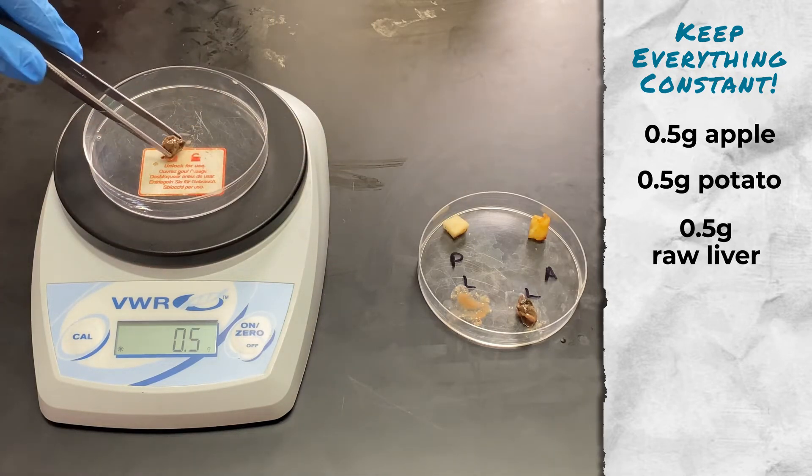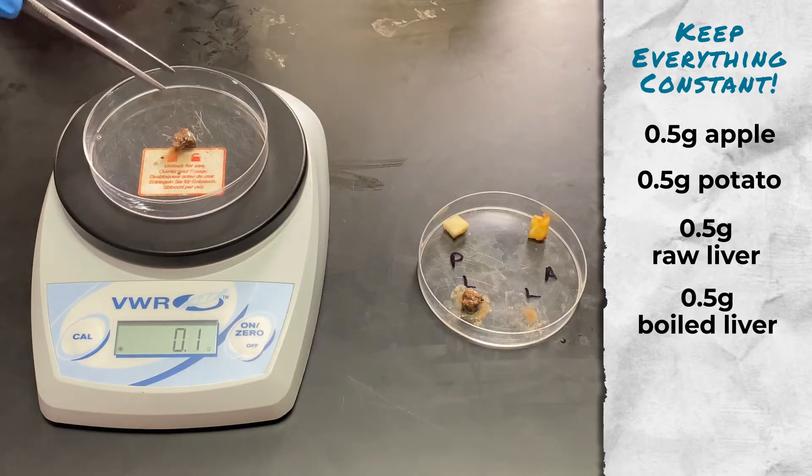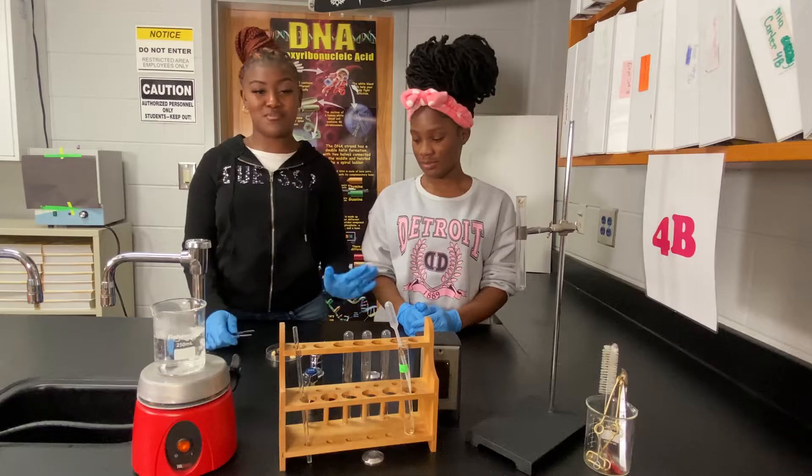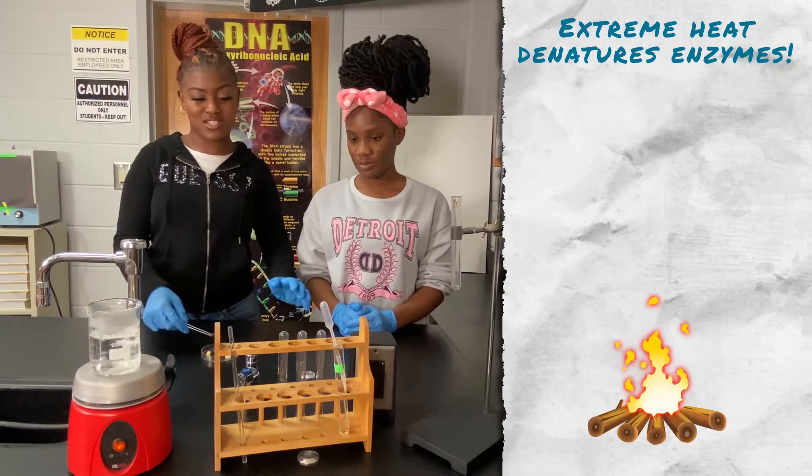We'll put one piece of liver into boiling water and one in a test tube with peroxide. Before we do the rest of our experiment, we have to put one of those pieces of chicken liver into boiling water.